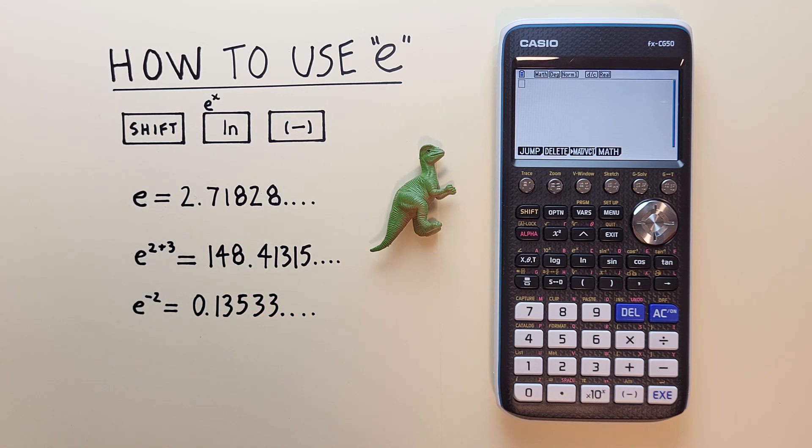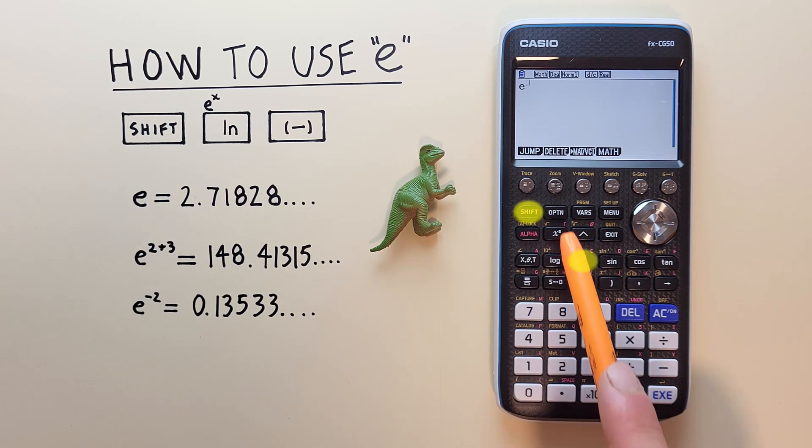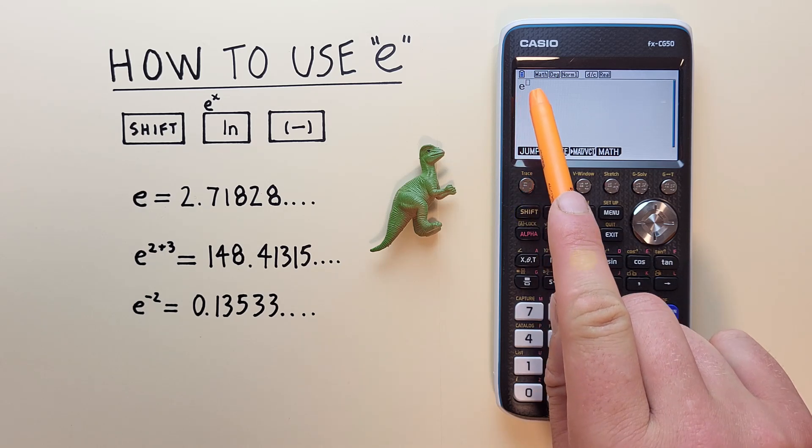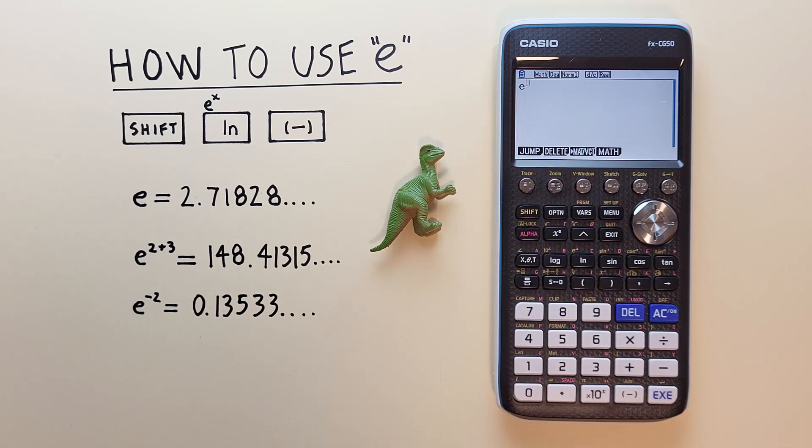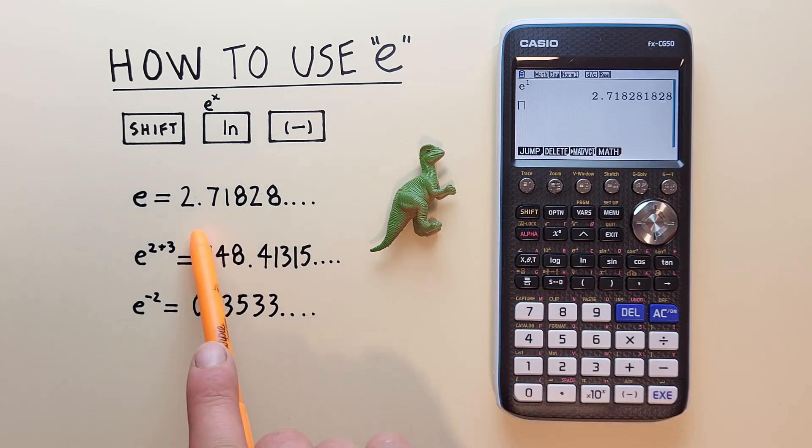If we just want to get e, or Euler's number on its own, what we have to do is press shift ln, and we see an e with an exponent box. Since we just want the e on its own, we can put a 1 in there, and press exe. And we see we get 2.71828 etc, which is correct.